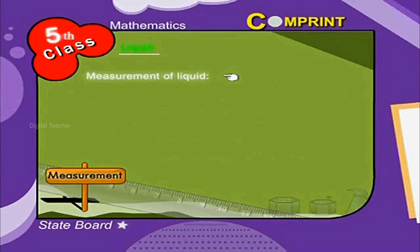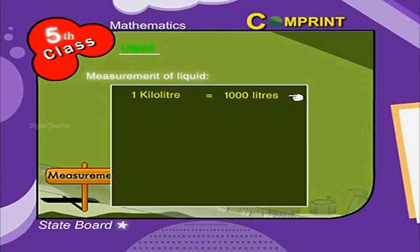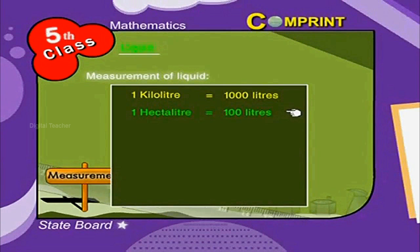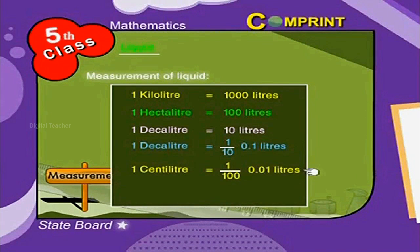Measurement of liquid: liters and milliliters are used to measure liquids. One kiloliter is equal to one thousand liters. One hectoliter is equal to one hundred liters. One decaliter is equal to ten liters. One deciliter is equal to one-tenth of a liter, that is 0.1 liter. One centiliter is equal to one-hundredth of a liter, that is 0.01 liter.